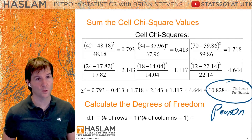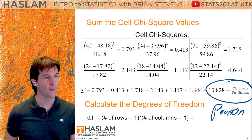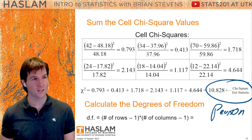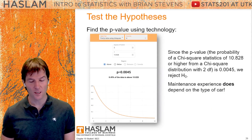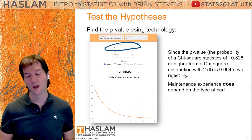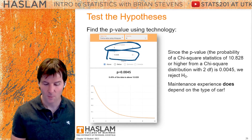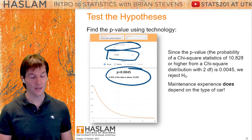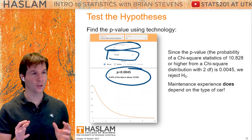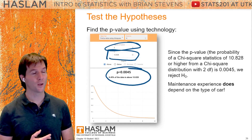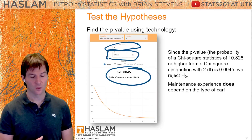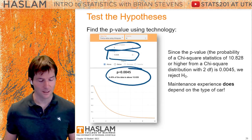After getting the Pearson chi-squared test statistic, you plot it to find the p-value — it's a lot like a t or a z; it's a standardized difference. With two degrees of freedom and the test statistic entered, we see a p-value of 0.0045. I reject the null hypothesis that maintenance and car type are independent because my p-value of 0.0045 is below my alpha of 0.05. I have evidence for the alternative that maintenance and car type are in some way associated — not independent.